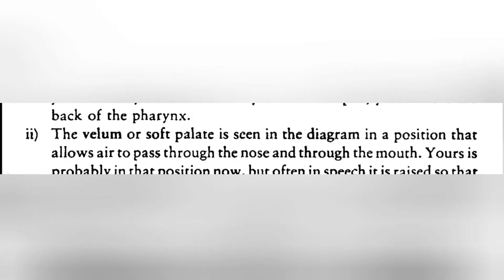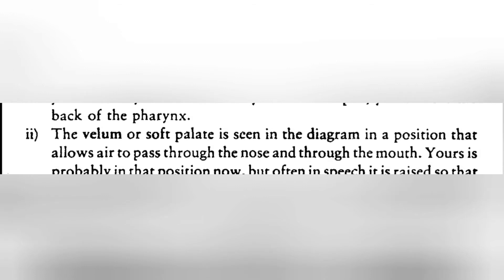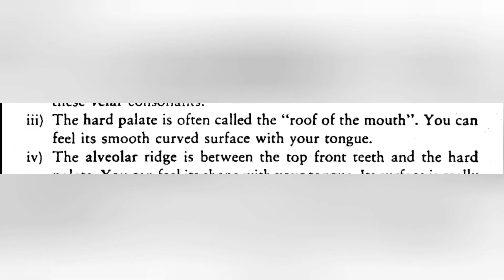The velum, or soft palate, is seen in the diagram in a position that allows air to pass through the nose and through the mouth. Yours is probably in that position now, but often in speech it is raised so that air cannot escape through the nose. The other important thing about the velum is that it is one of the articulators that can be touched by the tongue. When we make sounds like /g/ and /k/, the tongue is in contact with the lower side of the velum, and we call these velar consonants.